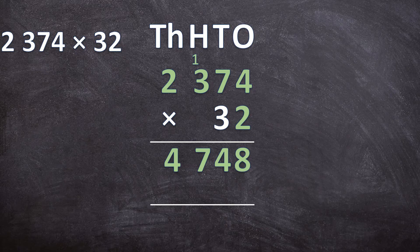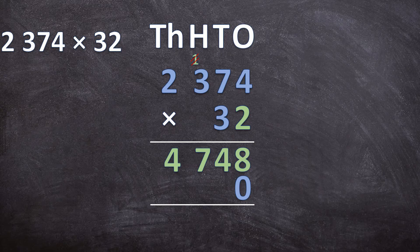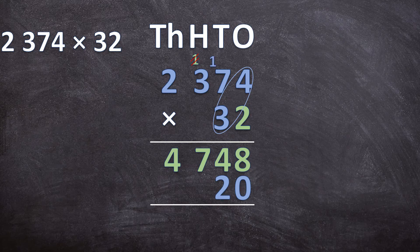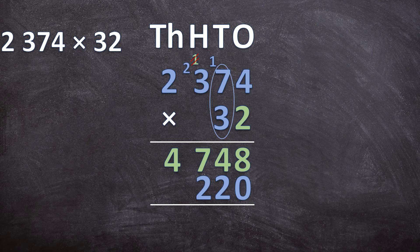Now we move on to the 30. We already multiplied with the 2, so make sure you cancel that carried 1 so we don't get confused and use it again. The second thing to remember: write a 0 in the answer line because we are multiplying by 30, not just by 3. Now start multiplying digits: 3 times 4 is 12 — write down the 2, carry over the 1. Next, 7 times 3 is 21, plus the carried 1 is 22 — write down the 2 and carry over the 2.